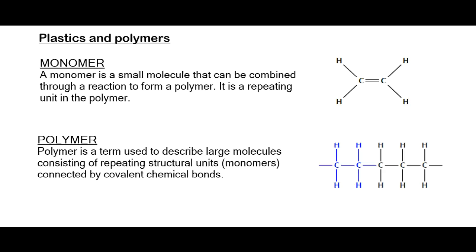Polymers are very long organic chains. Looking at the definitions we need to know: a monomer is a small molecule that can be combined through a reaction to form a polymer — it is a repeating unit found in a polymer. A polymer is the term used to describe large molecules consisting of repeating structural units of monomers connected by covalent chemical bonds.